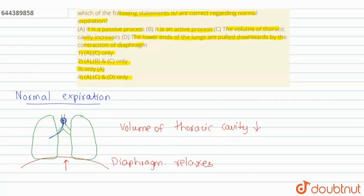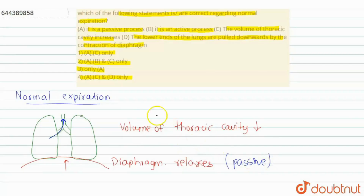As the diaphragm pushes upwards, the lungs are compressed and all the air from the lungs is pushed out. This is how the process of normal expiration takes place. Because it is due to relaxation of the diaphragm, and relaxation is a passive process, normal expiration is a passive process.